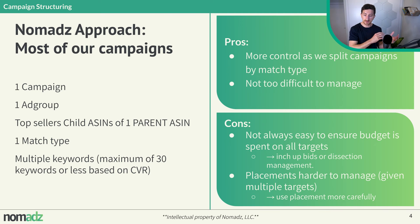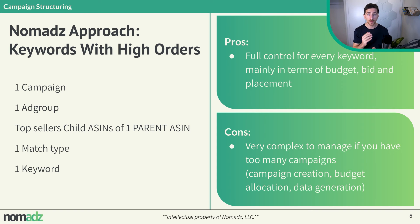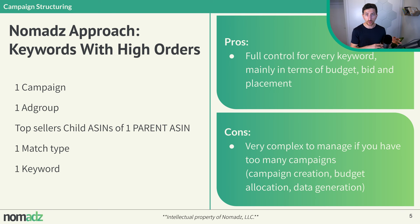For keywords with high orders, we use the single keyword campaign approach, which is one campaign, one ad group, top seller child ASINs of one parent ASIN, one match type, one keyword. We don't always put only one child ASIN inside the ad group — most of the time we put multiple child ASINs because Amazon prefers to see multiple child ASINs in an ad group. For a very important keyword where we want to rank, we don't want it in a multi-keyword campaign. We want it in a single keyword campaign, which allows full control over budget, bid, and especially placement.